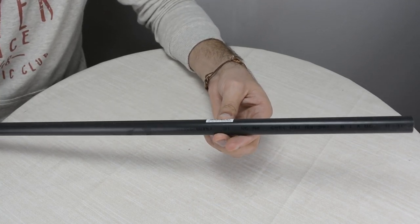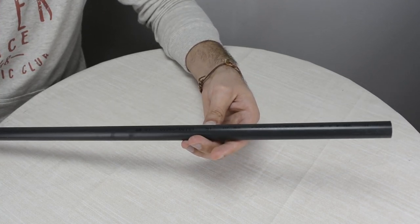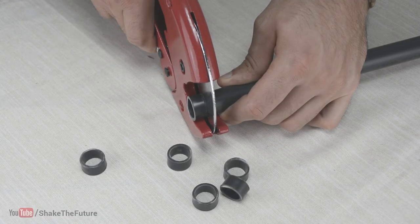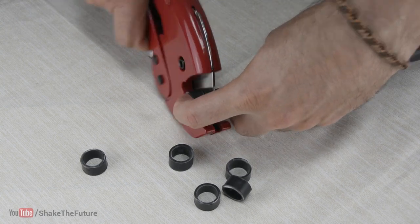Let's make a light shade from a PVC pipe. I cut out lots of rings from a PVC pipe.